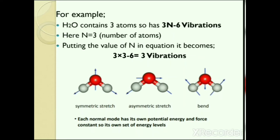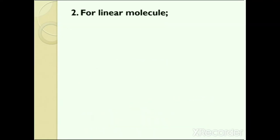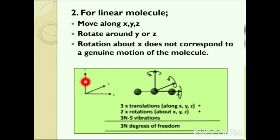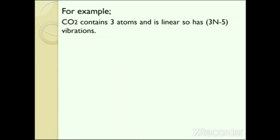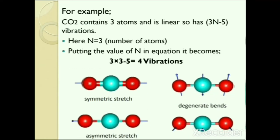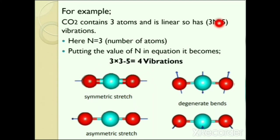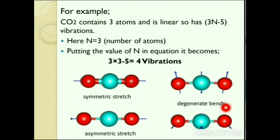For a linear molecule, atoms rotate around only Y and Z (rotation around X does not correspond to genuine motion), giving 3 translations, 2 rotations, and 3N − 5 vibrations. For example, carbon dioxide contains 3 atoms and is linear, so it has 3(3) − 5 = 4 vibrations: symmetric stretch, asymmetric stretch, and 2 types of bending vibrations.